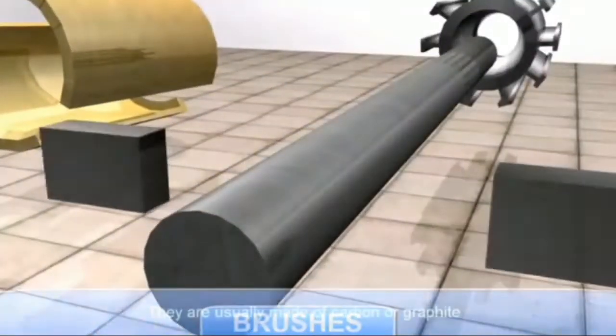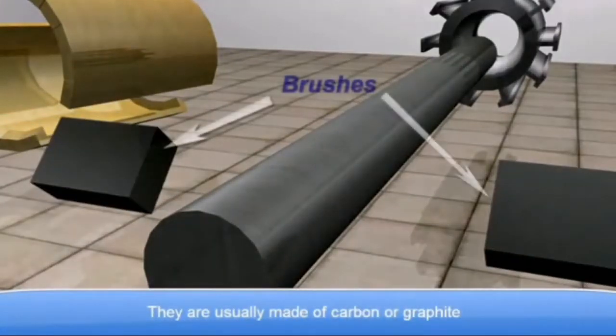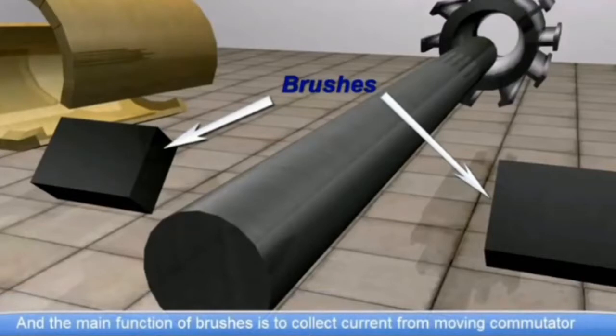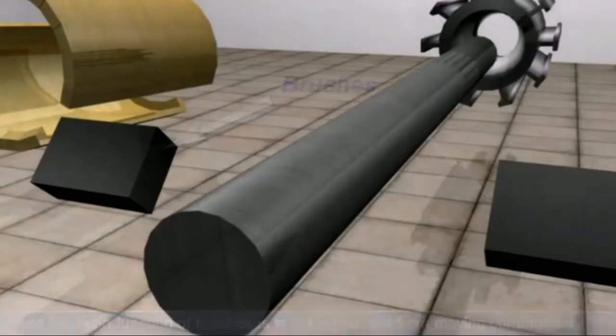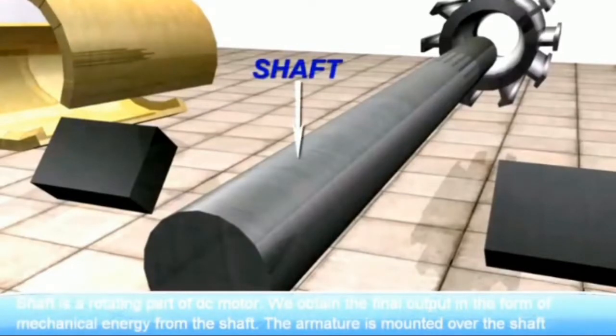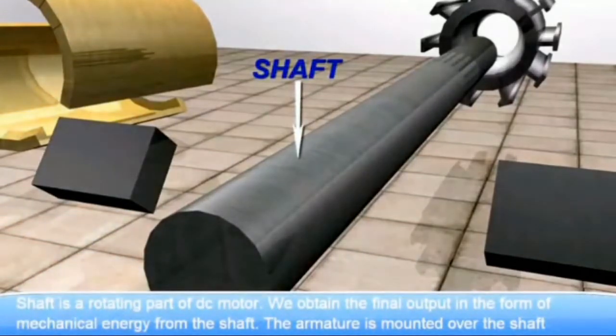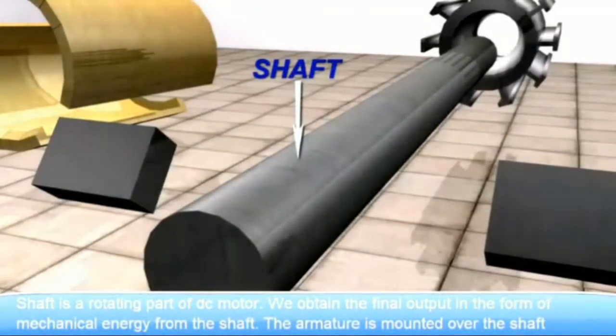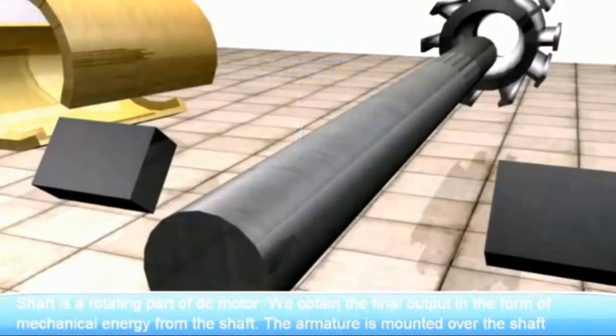Brushes. They are usually made of carbon or graphite. And the main function is current supply to the commutator. Shaft. The shaft is the mechanical part. We obtain the final output in the form of mechanical energy from the shaft.